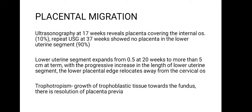There is another concept known as placental migration. A USG at 17 weeks may reveal the placenta is covering the internal os in a low-lying position, but if you repeat the USG at 37 weeks it may show the placenta is no longer in the lower uterine segment and has migrated to the normal position. One reason is that the lower uterine segment expands from 0.5 cm at 20 weeks to more than 5 cm at term — with this progressive increase in length, the lower placental edge relocates away from the cervical os.